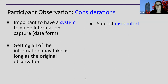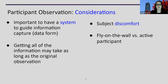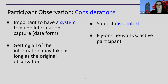You need to consider subject discomfort. It's uncomfortable for people to be observed, so your subjects might not act as naturally as they would if no one were watching. Allow enough time for subjects to become comfortable with the observation so they can reach a more natural interaction. You also want to consider whether you're going to be a fly-on-the-wall observer or an active participant. You might want multiple observers — one active participant and one fly on the wall — to get multiple views of the behavior in the environment.